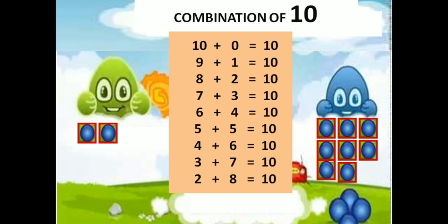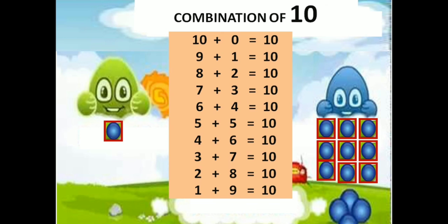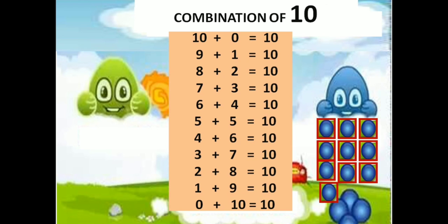Green doll having 2 balls, blue doll having 8 balls — 2 plus 8 equals 10. Green doll having 1 ball, blue doll having 9 balls — 1 plus 9 equals 10. Green doll having 0 balls, blue doll having 10 balls — 0 plus 10 equals 10.